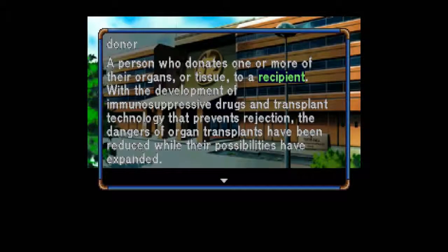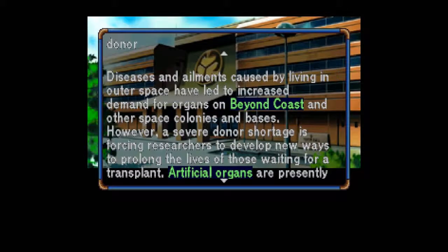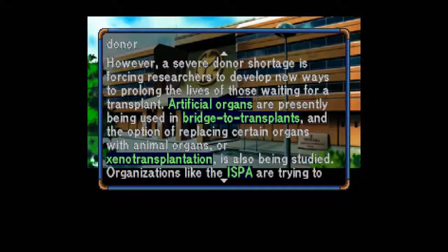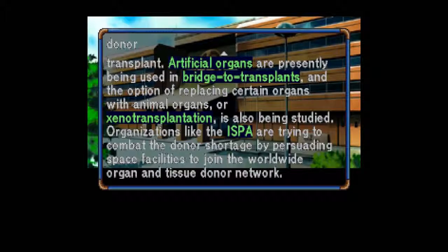Donor: A person who donates one or more of their organs or tissue to a recipient. With the development of immunosuppressive drugs and transplant technology that prevents rejection, the dangers of organ transplants have been reduced while their possibilities have expanded. Diseases and ailments caused by living in outer space have led to increased demand for organs on Beyond Coast and other space colonies and bases. However, a severe donor shortage is forcing researchers to develop new ways to prolong the lives of those waiting for a transplant. Artificial organs are presently being used in bridge to transplants, and with animal organs — xenotransplantation — also being studied. Organizations like the ISPA are trying to combat the donor shortage by persuading space facilities to join the worldwide organ and tissue donor network.